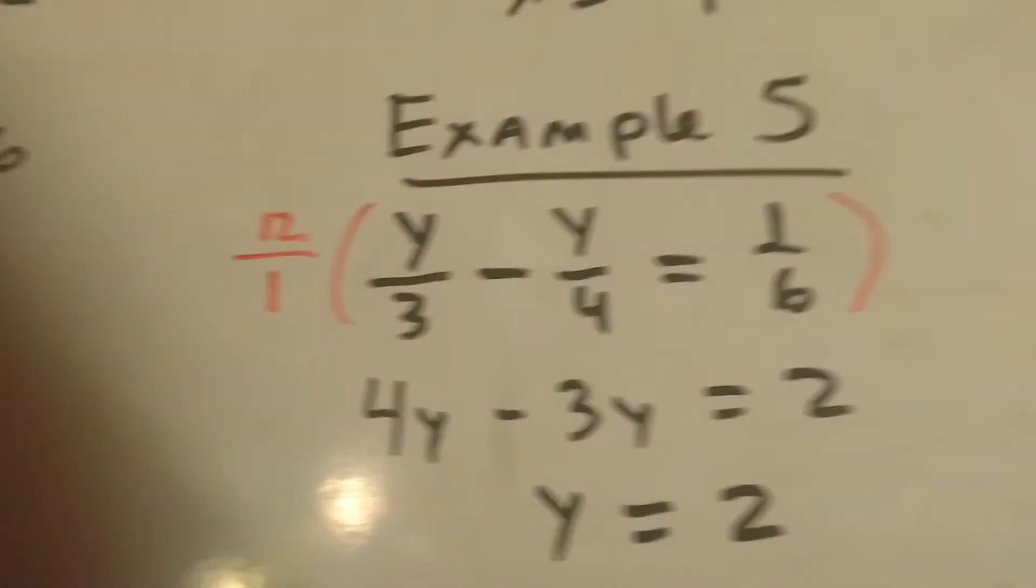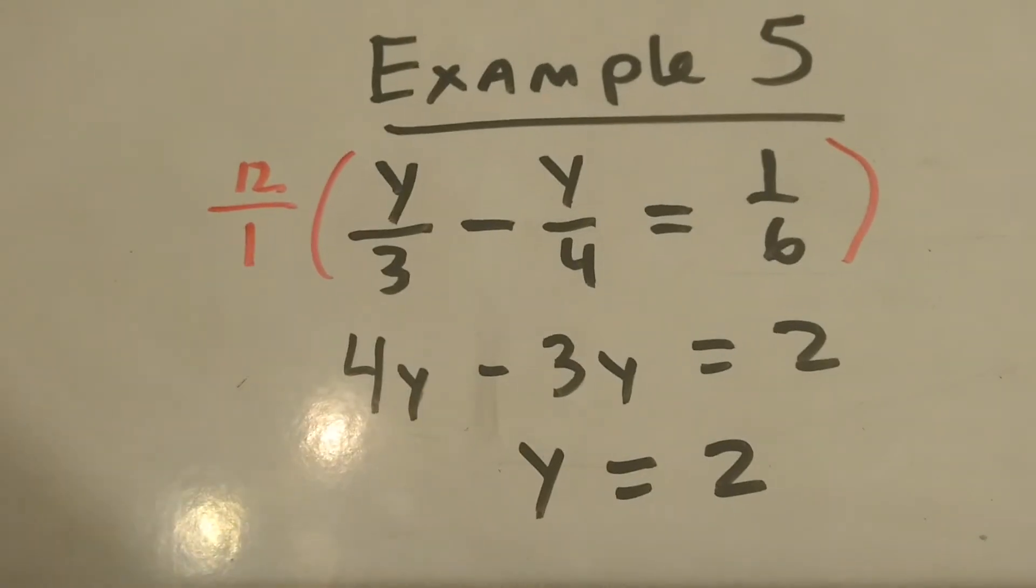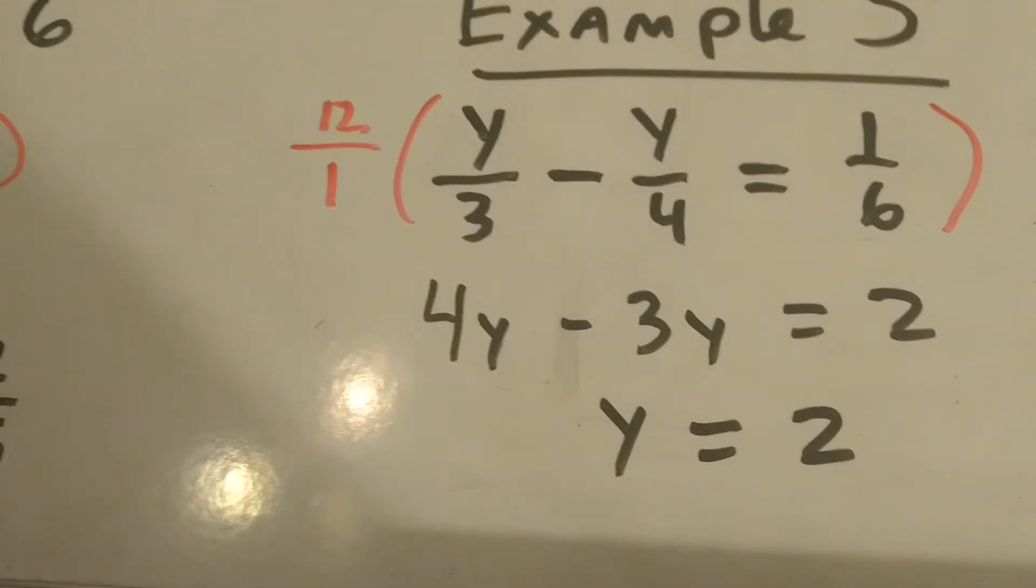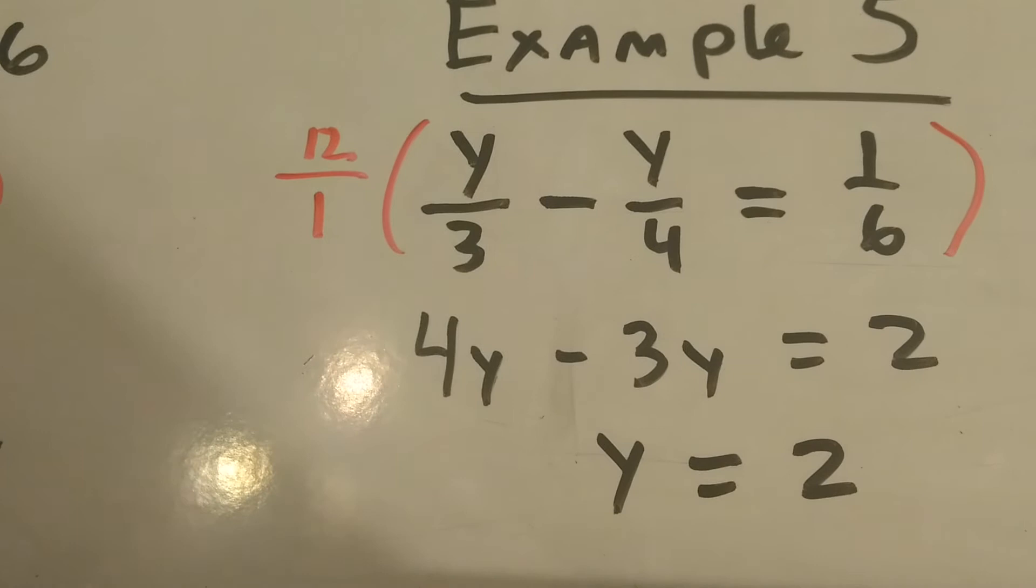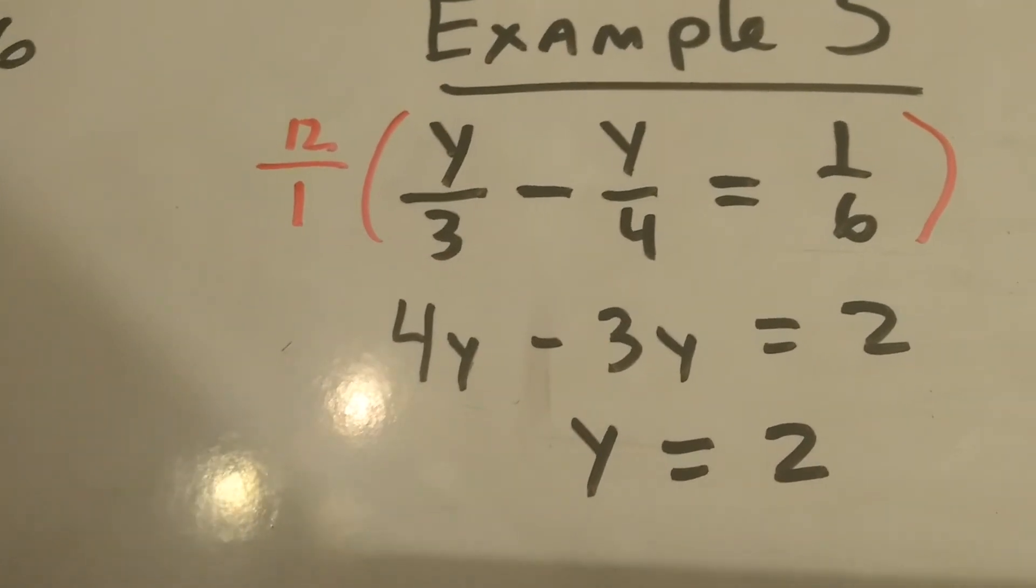Here's example 5. This is dealing with fractions. Just like with decimals, we don't have to deal with fractions. So what I'm doing is I'm looking at the denominators: 3, 4, and 6. I'm finding the smallest number that all my denominators will divide into evenly, which happens to be 12.